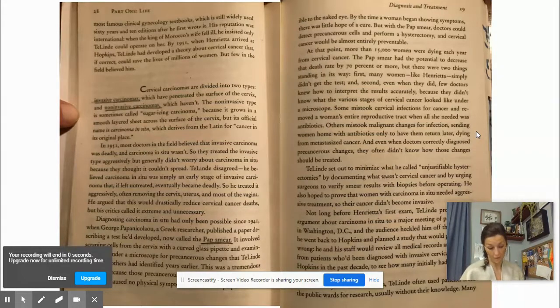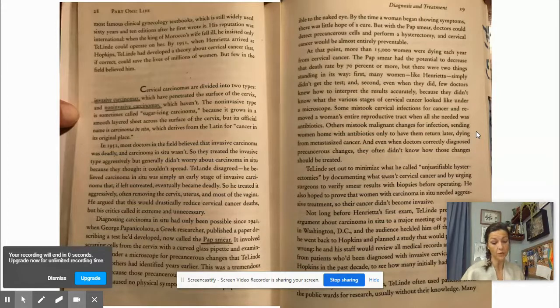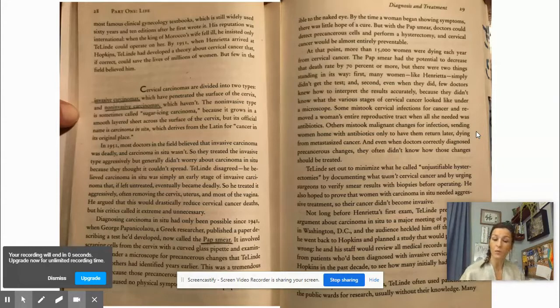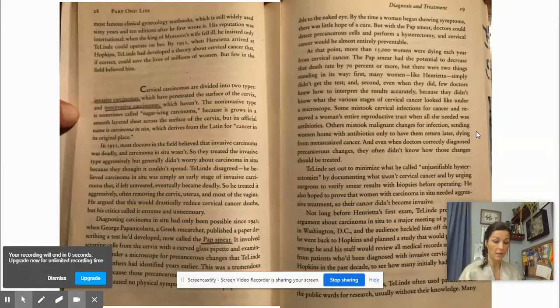Diagnosing carcinoma in situ only became possible in 1941 when George Papanicolaou, a Greek researcher, published a paper describing a test he developed, now called the pap smear. It involved scraping cells from the cervix with a curved glass pipette and examining them under a microscope for precancerous changes. This was a tremendous advance because those precancerous cells weren't detectable otherwise. But with the pap smear, doctors could detect precancerous cells and perform a hysterectomy, and cervical cancer would almost entirely be preventable. At that point, more than 15,000 women were dying each year from cervical cancer. The pap smear had the potential to decrease that death rate by 70% or more. But there were two things standing in its way.